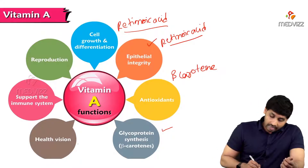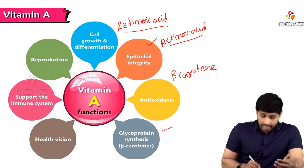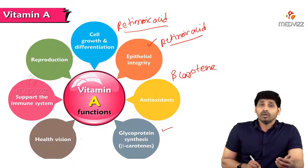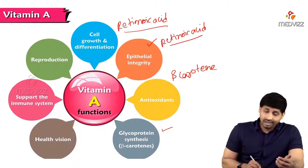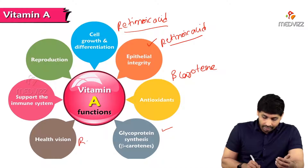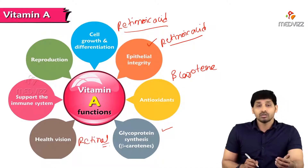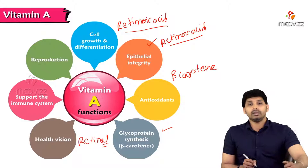Another function is healthy vision — making of the visual pigment rhodopsin. Rhodopsin is made by the aldehyde form of retinoid, that is retinal. So the aldehyde form of retinoid is useful in healthy vision.